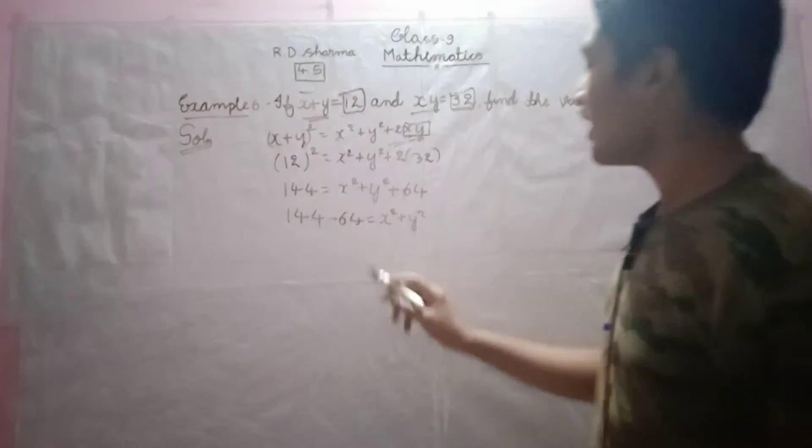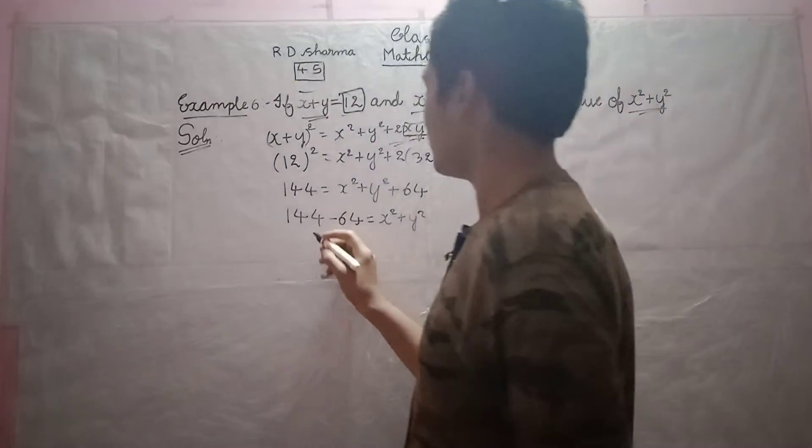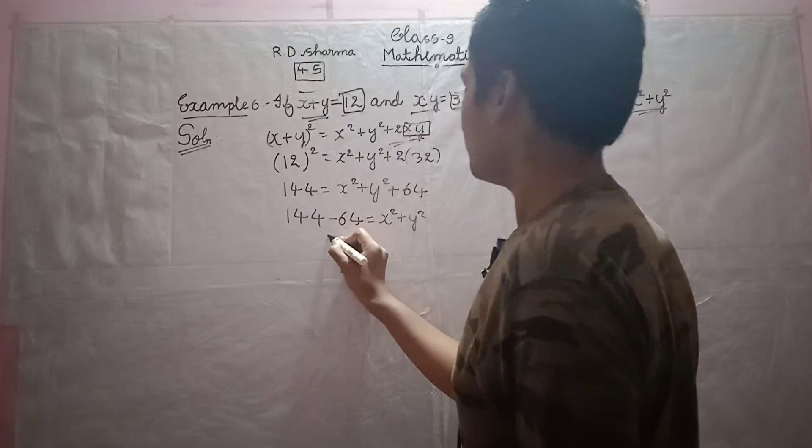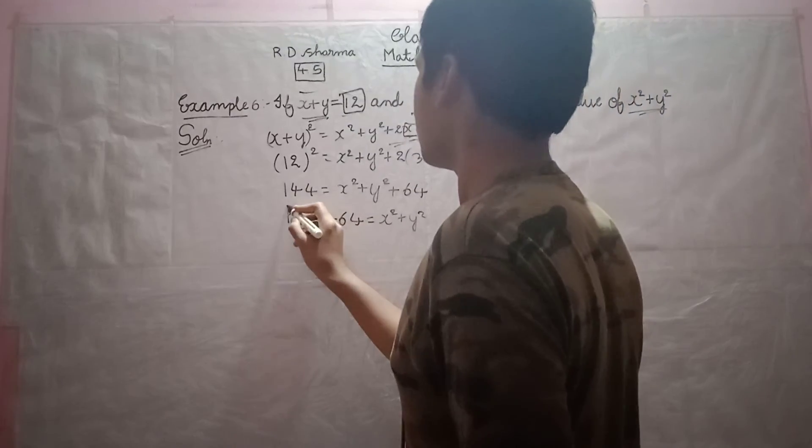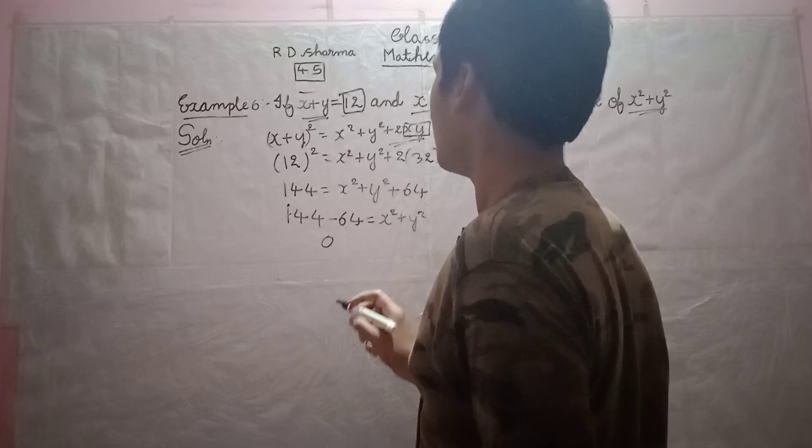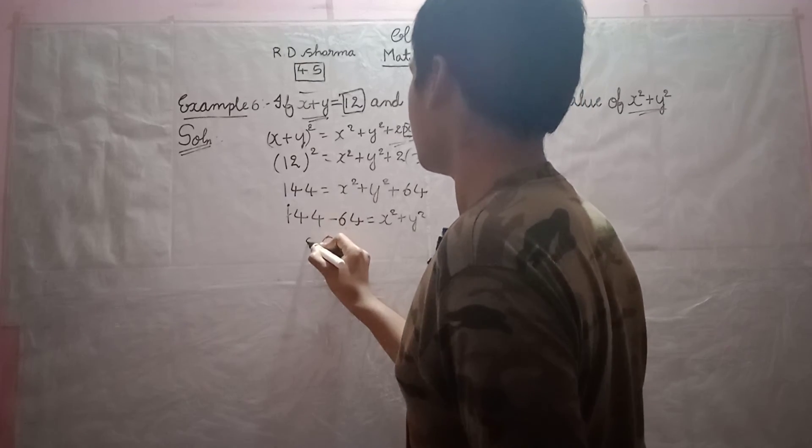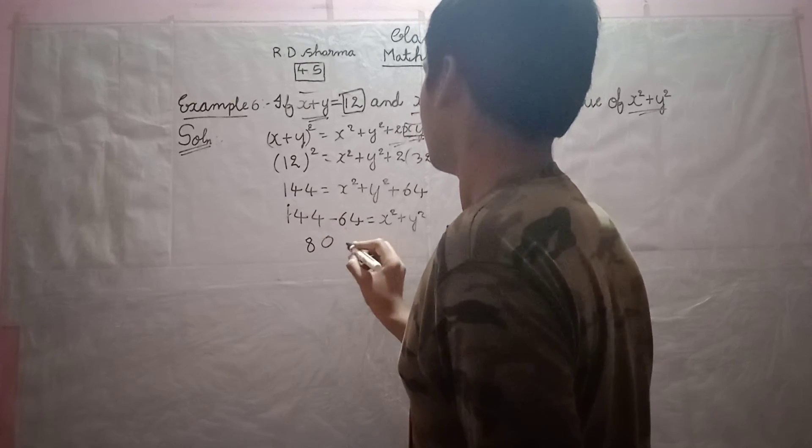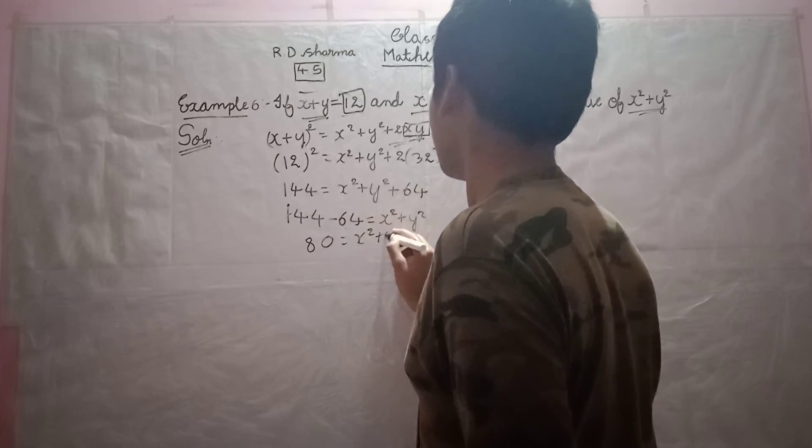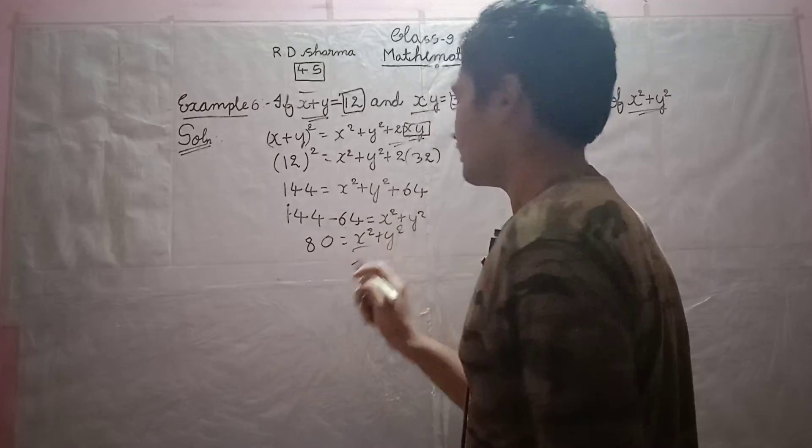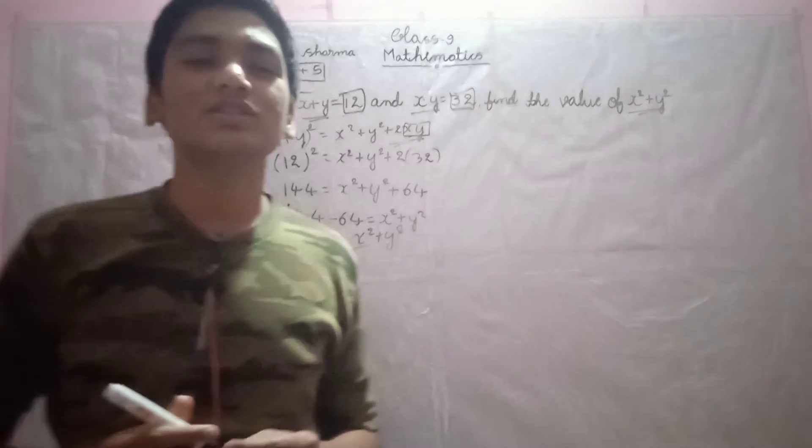Come on, find the value of this, 144 minus 64. It is 4 minus 4 is 0. Next, it is 14 minus 6 is 8. So 80 is equal to x square plus y square. Thank you for watching this video.